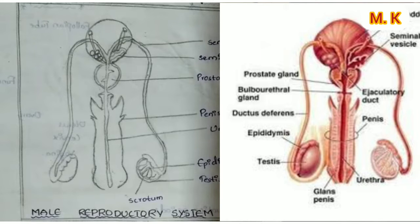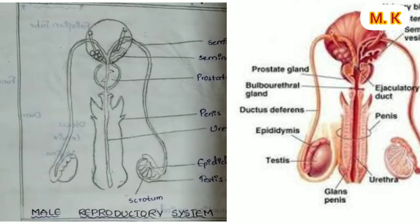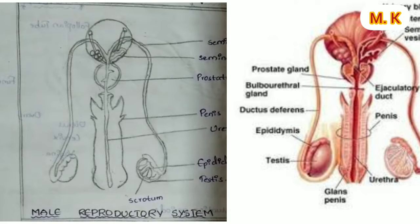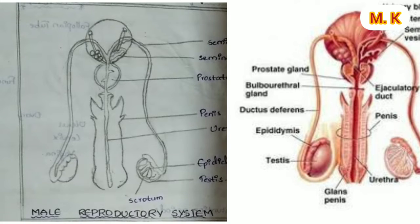The function of testes: the testes are located outside the abdominal cavity within a pouch called scrotum. In each testis, highly coiled seminiferous tubules are present. Sperms are produced in these tubules by meiosis in very large numbers — hundreds of millions. Male sex hormone testosterone is also produced in testes. The scrotum helps in maintaining a low temperature of the testes, 2 to 2.5 degrees Celsius lower than the body temperature, which is necessary for sperm formation.